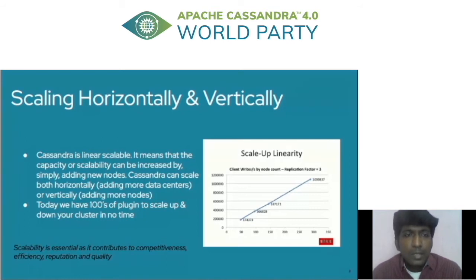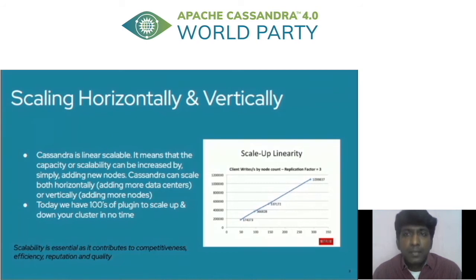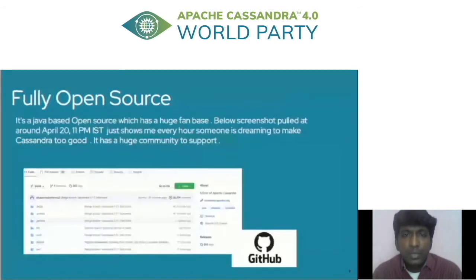The first thing I want to call out is scalability. Cassandra's default architecture is scalable and elastic — it can scale both vertically and horizontally. The major point is that this scaling happens without any downtime.